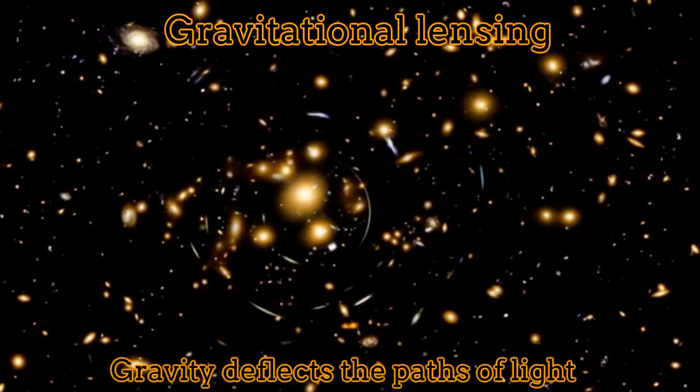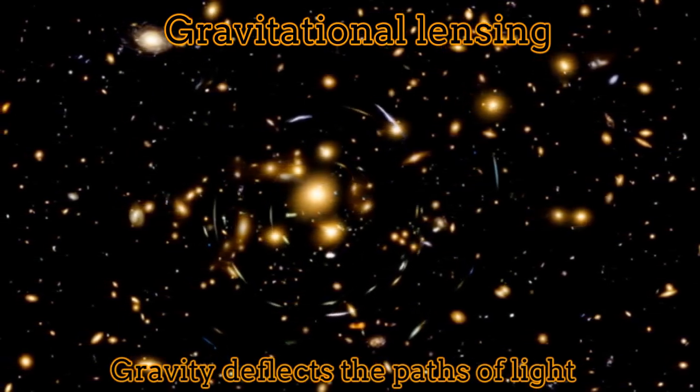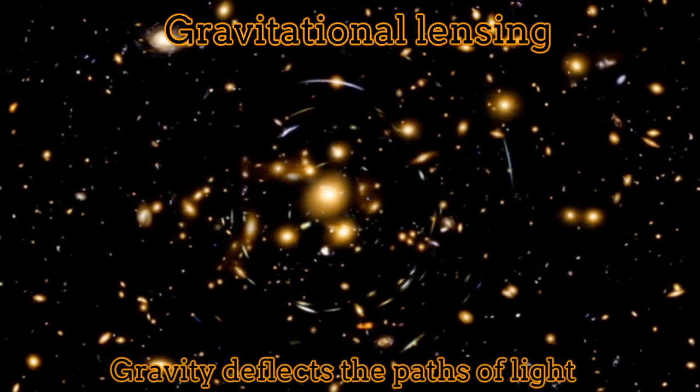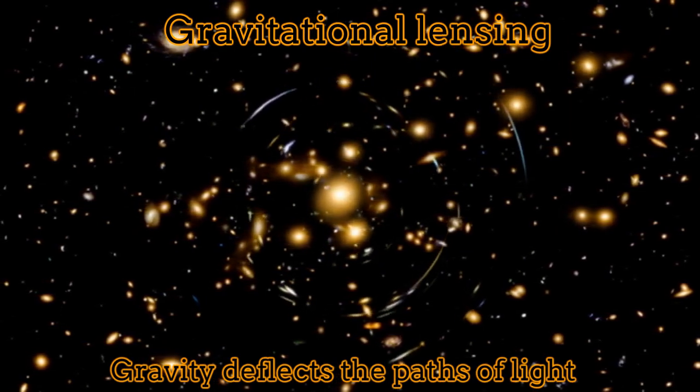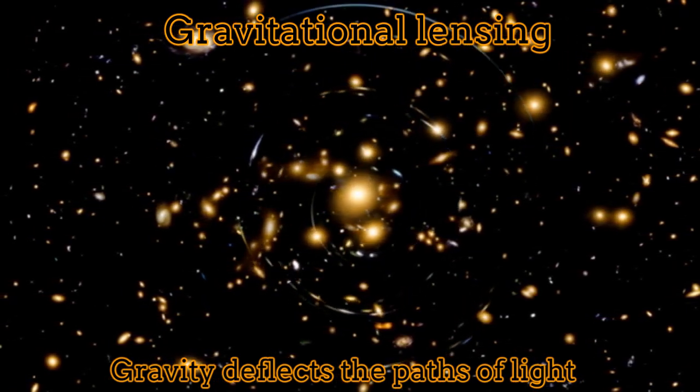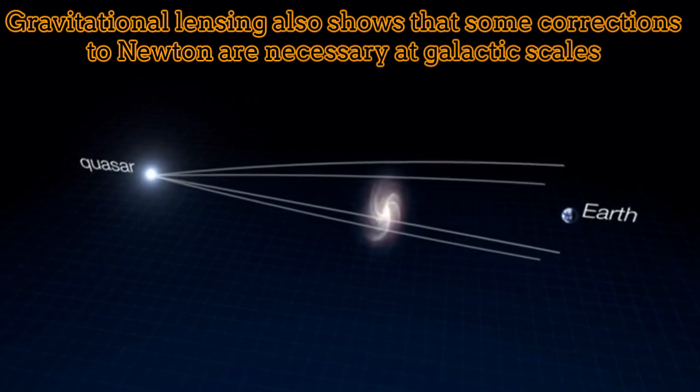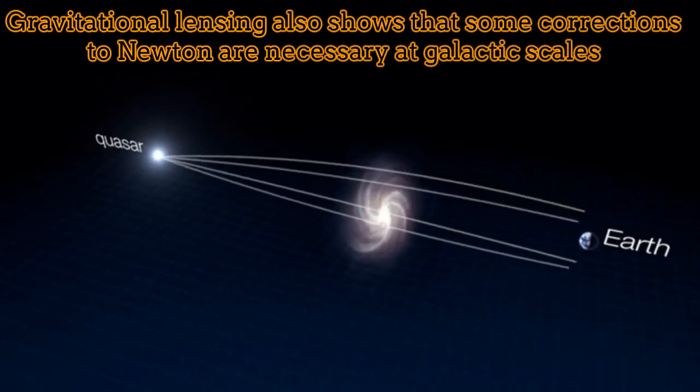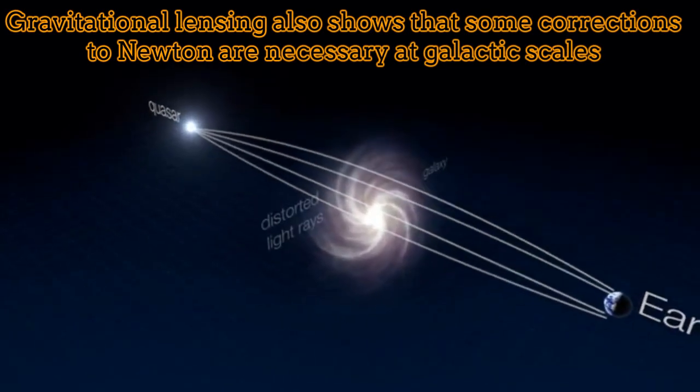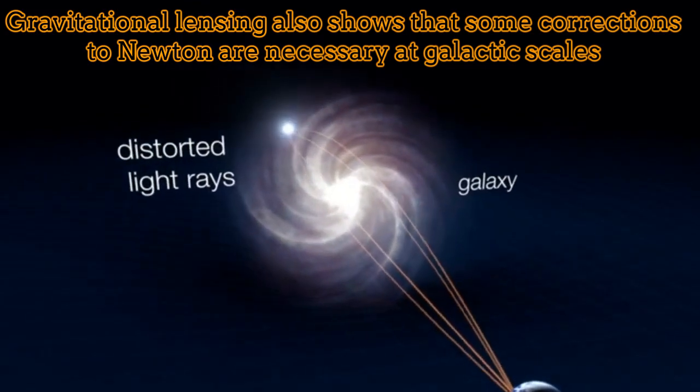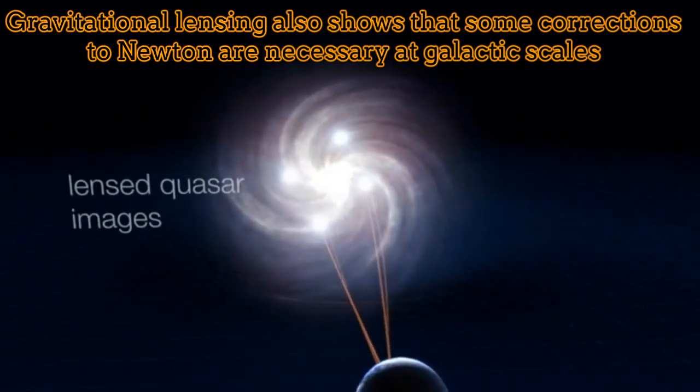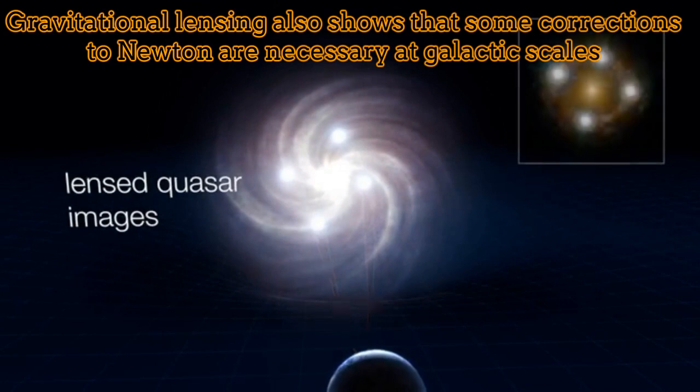One very well-known effect in gravity is the gravitational lenses, which consist in the deviations of the paths of light due to the presence of gravity. The recent observations of gravitational lenses suggest the existence of an additional source of gravity, able to generate further deviations on the paths of light. It is for this reason that some scientists conjectured the existence of dark matter.